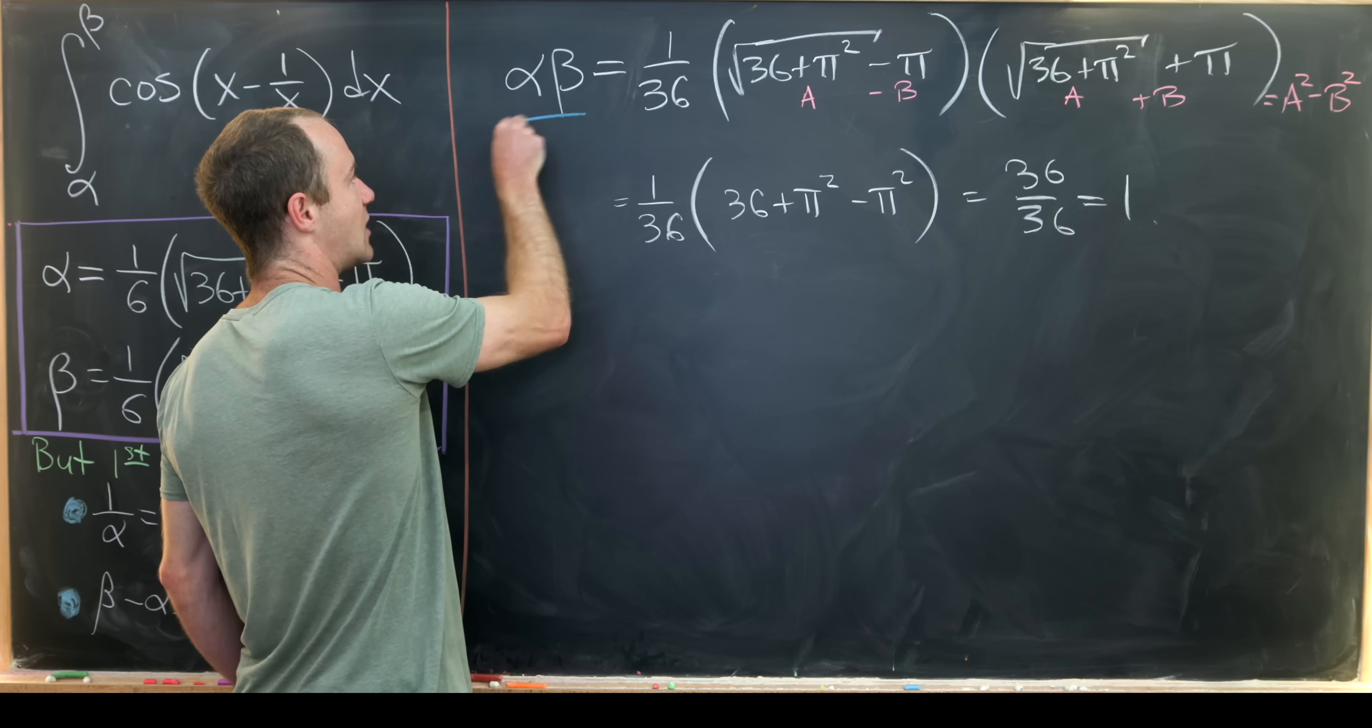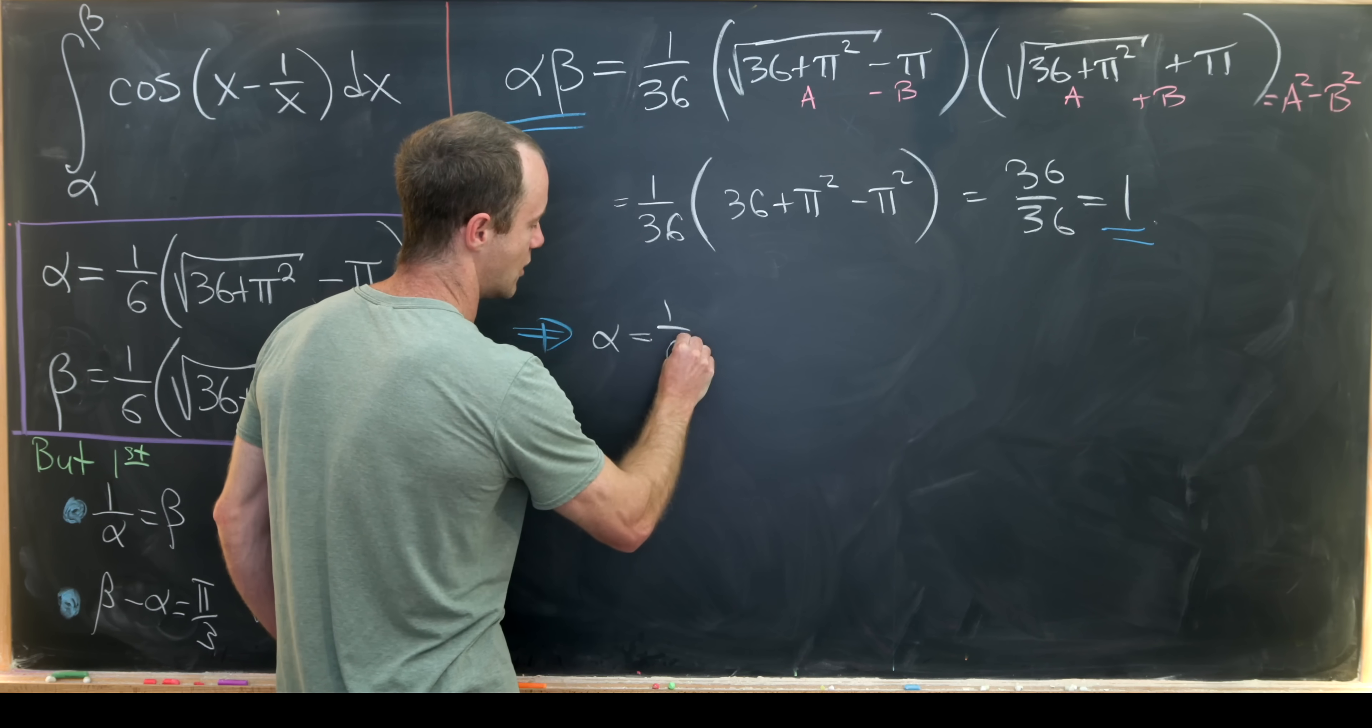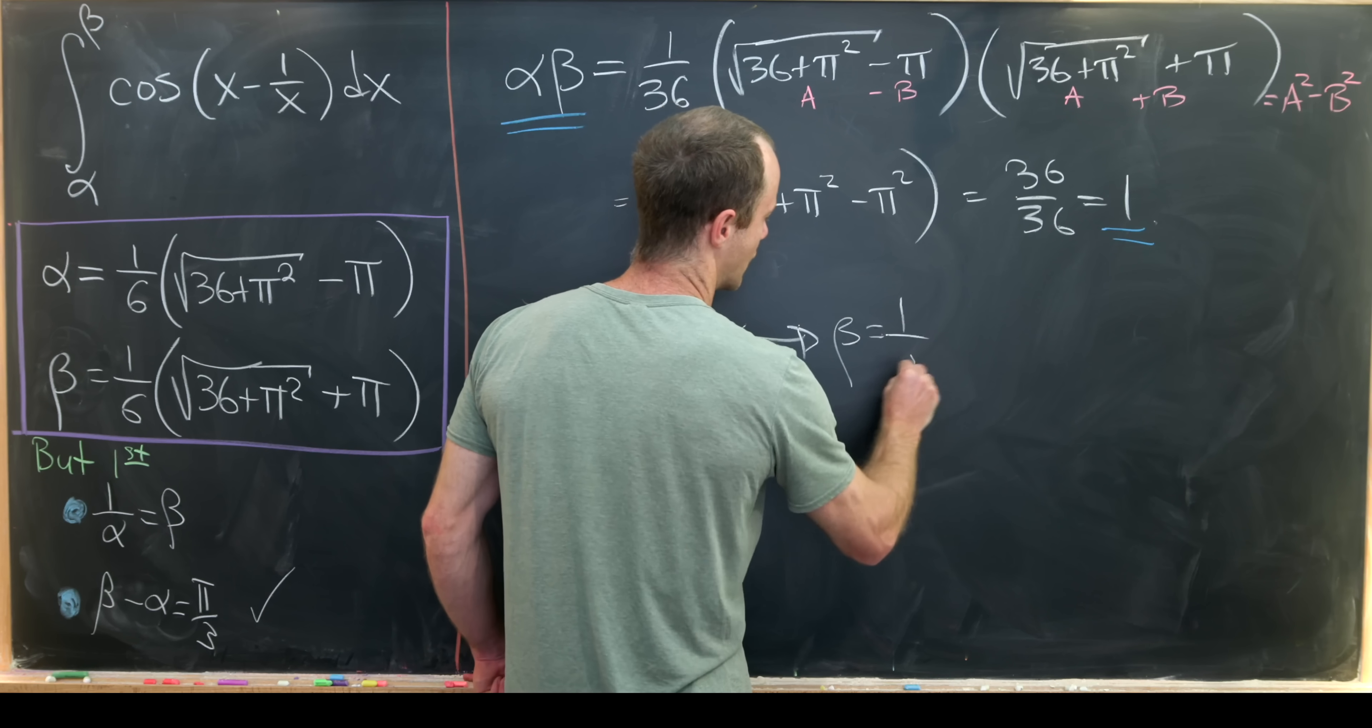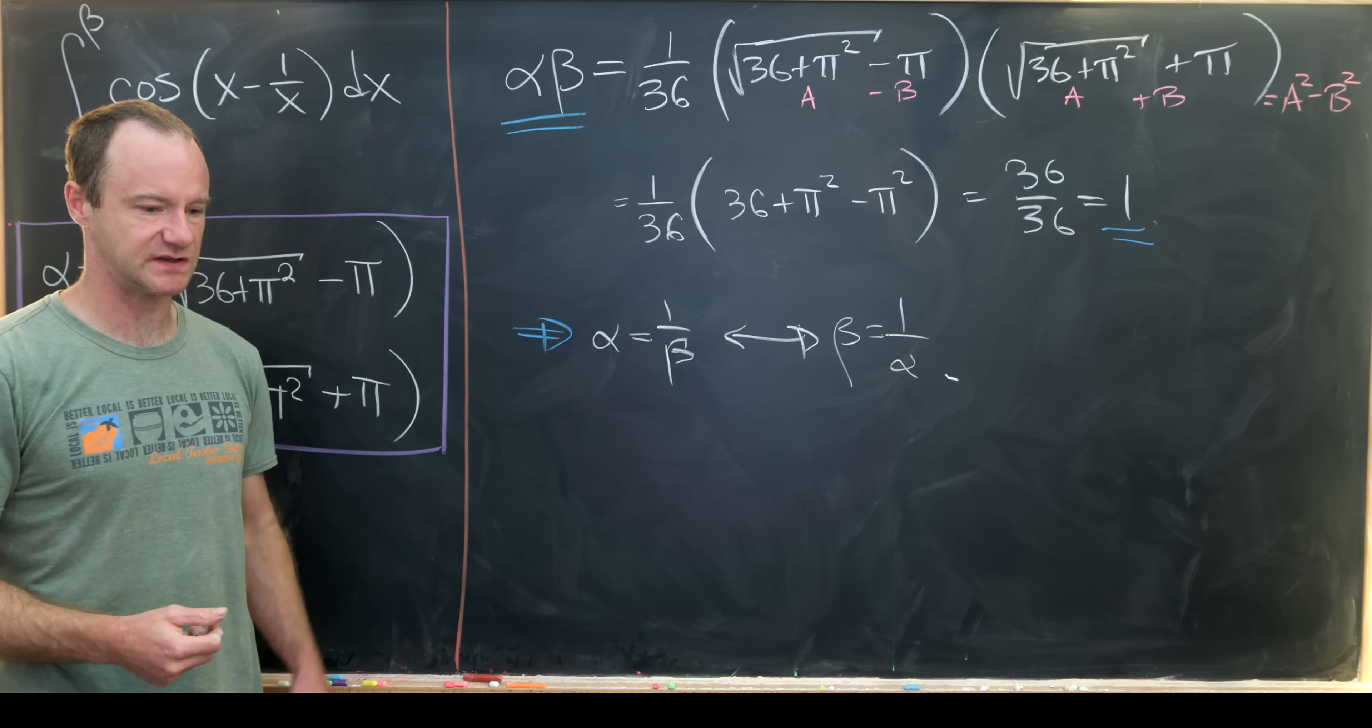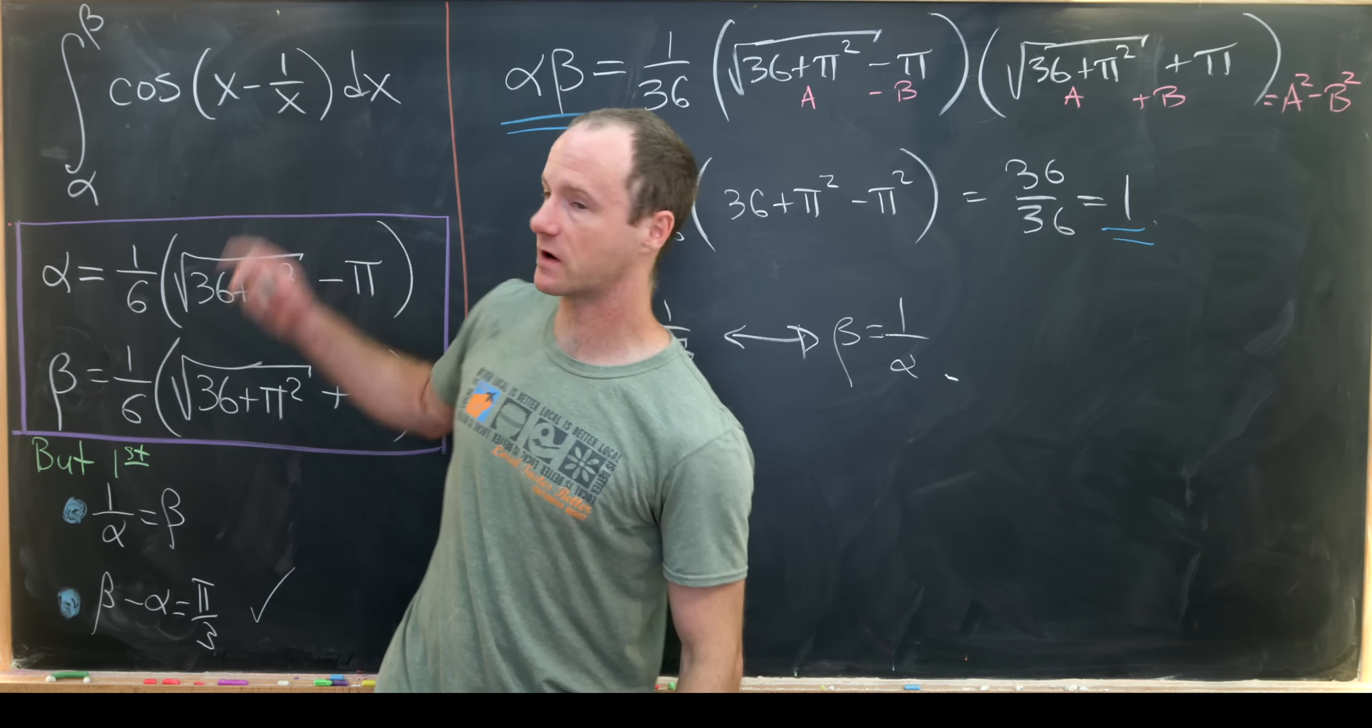But if we know that alpha times beta is equal to 1 then very clearly we have alpha equals 1 over beta, and in concert with this we have beta equals 1 over alpha. So these are multiplicative inverses of each other. Okay so now that we've got these arithmetic properties out of the way let's maybe move on to our integral.